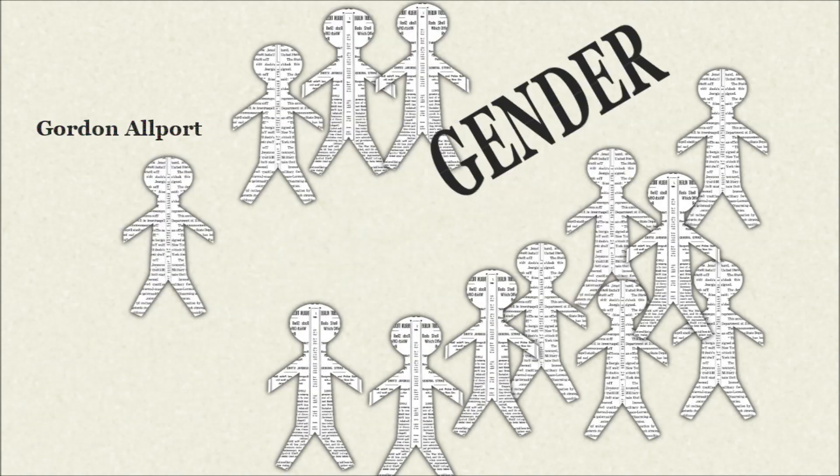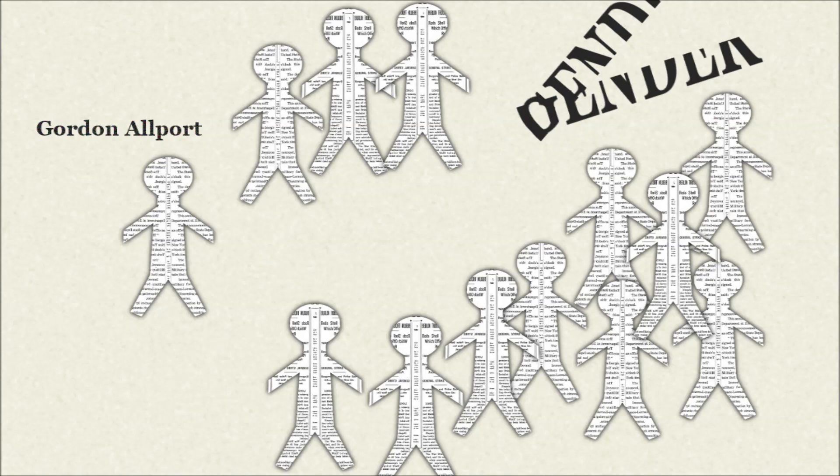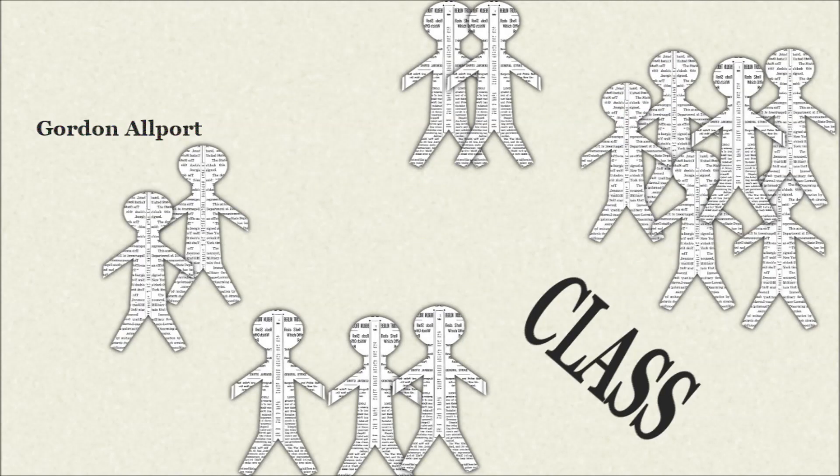People rapidly categorize each other by social groups, such as ethnicity, gender, age, class, disability, religion, and more.